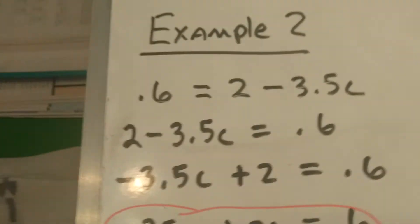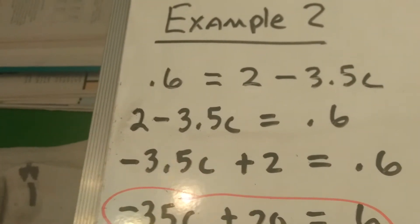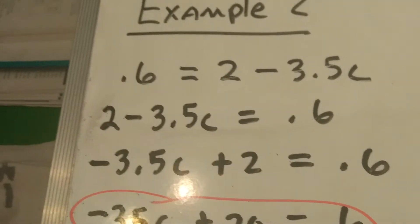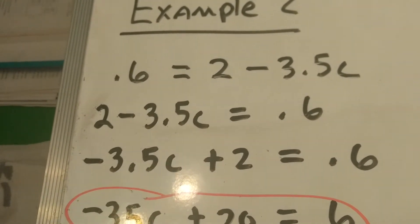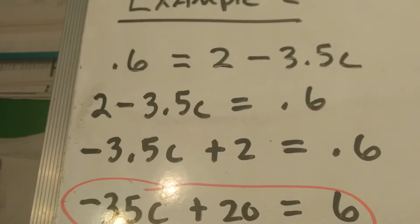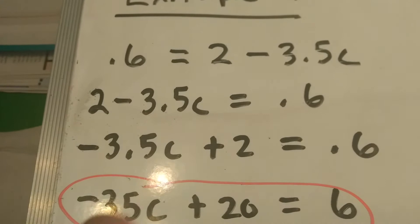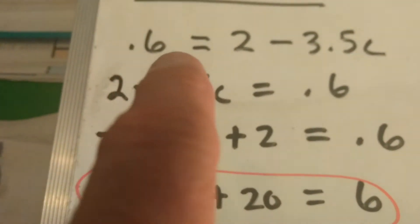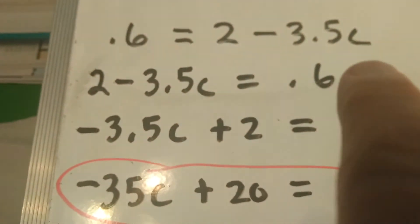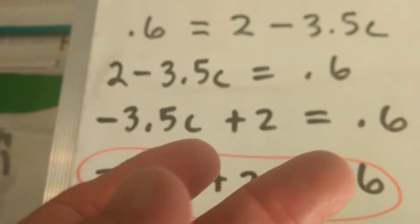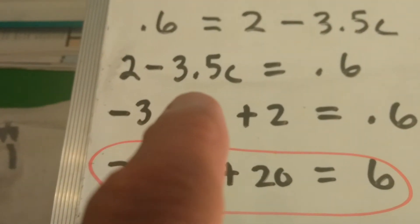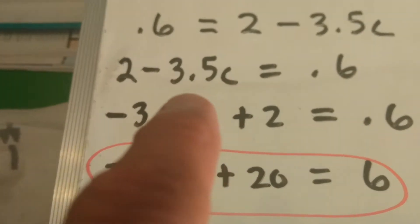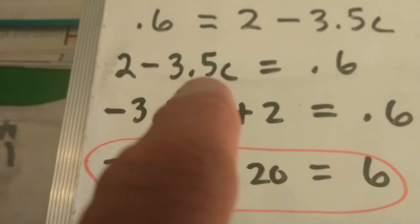Here's example 2. It deals with decimals. Well, we don't have to deal with decimals. We can do something with these to make it so we don't have decimals. So you can see the first thing I did here, we have 0.6 equals 2 minus 3.5c. The first thing I did was take these and switch sides, because we want the variable number on the left.